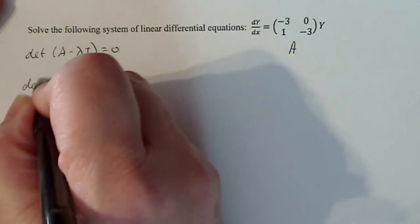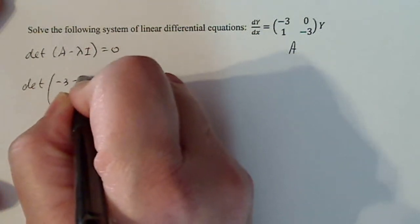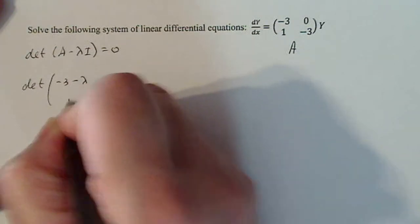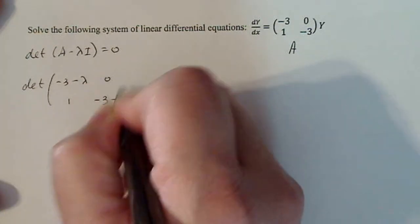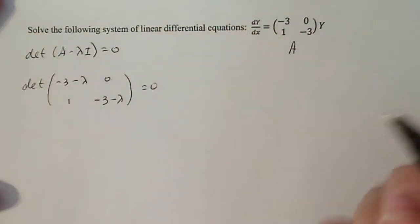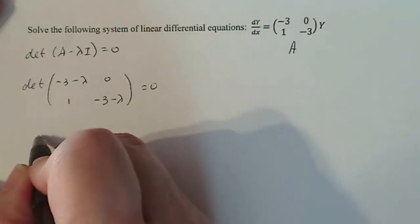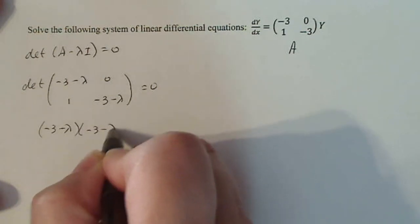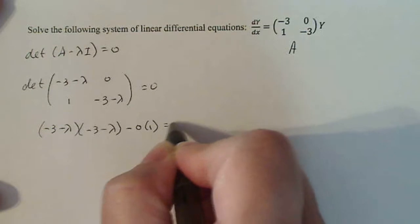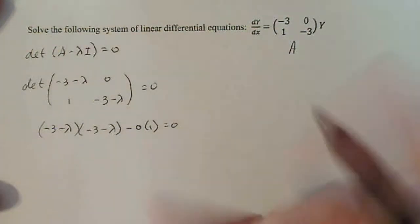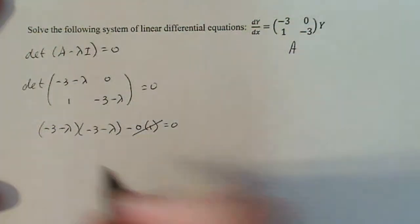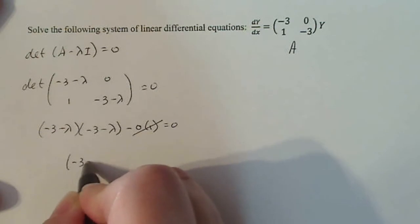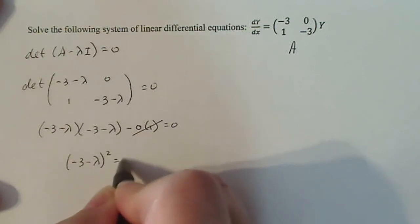So the determinant of A minus lambda I is going to be minus three minus lambda, zero, one, minus three minus lambda. I want that determinant to be zero. So I have minus three minus lambda times minus three minus lambda minus zero times one equals zero. There's my characteristic polynomial. That's equal to zero, so I'm left with minus three minus lambda squared equals zero.